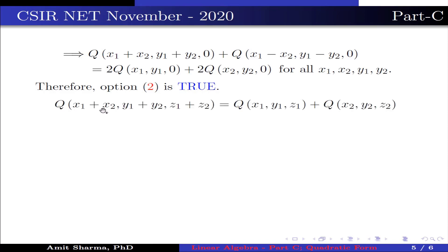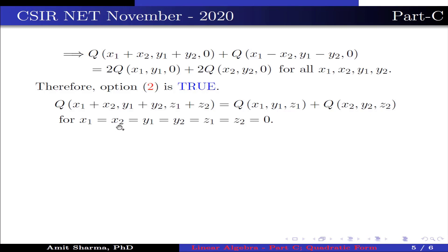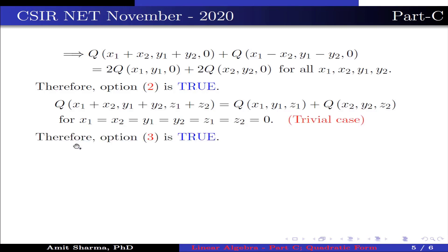Now Q(x1+x2, y1+y2, z1+z2) = Q(x1, y1, z1) + Q(x2, y2, z2) holds for the trivial case when x1 = x2 = y1 = y2 = z1 = z2 = 0. Therefore, Option 3 is true.